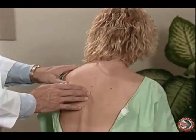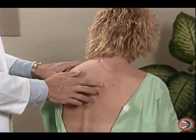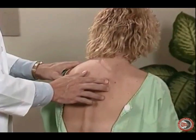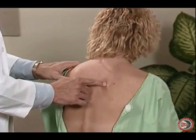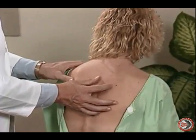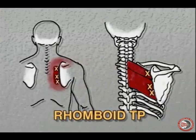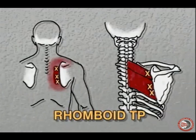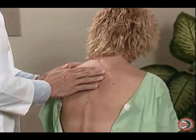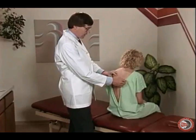The next muscles to evaluate are the rhomboid muscles, which run between the scapula and the spine. There are two rhomboid muscles — the minor and the major. You will palpate the belly of the muscle looking for a taut band and a twitch response. The pain pattern from these muscles will be between the scapula and the spine. These are common upper trunk and shoulder muscles which develop myofascial pain syndrome and are very common after motor vehicle accidents or trauma.